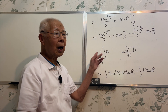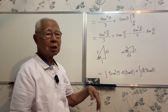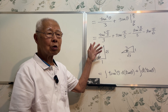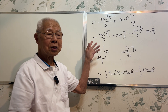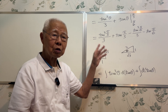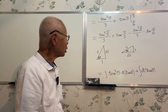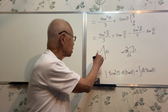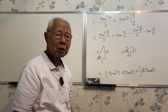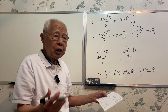Once you have this, any trig ratio — sine, cosine, tangent — is very easy. Use the definition of the trig ratios. Just put in the numbers and you get the result. That's it, finished.